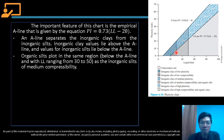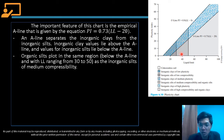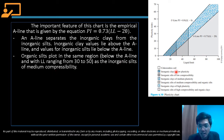For the region below the A-line with a liquid limit ranging from 30 to 50, that region corresponds to organic silts and inorganic silts of medium compressibility. For the region below the A-line with liquid limit greater than 50, that region corresponds to organic clay and inorganic silts of high compressibility.